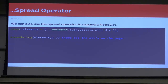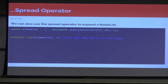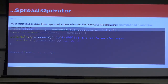You can also use the spread operator to expand a node list. If you just tried to loop over document.querySelectorAll, it's not going to let you loop over it because it's not an array — it's an array-like item, but not an actual array. But if you throw it into a spread and put it into an array, now it would list all of your divs.